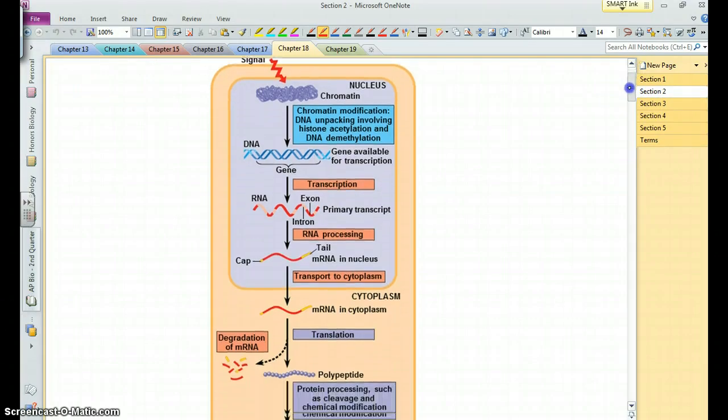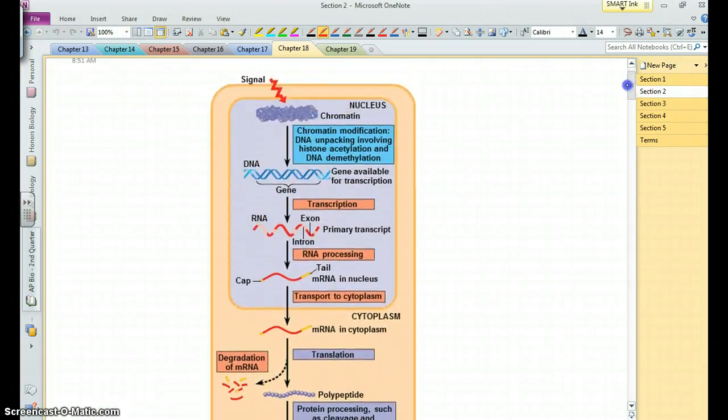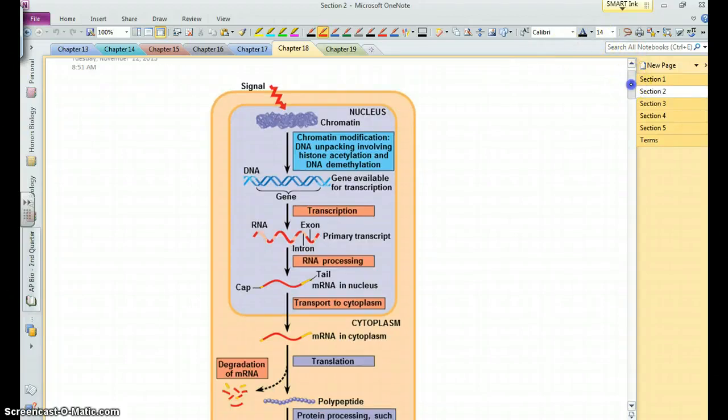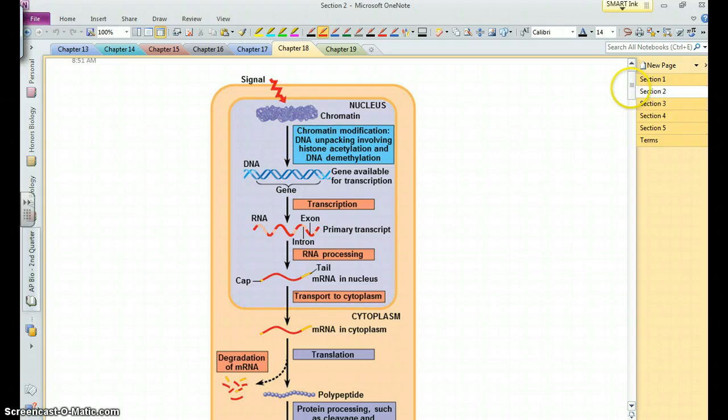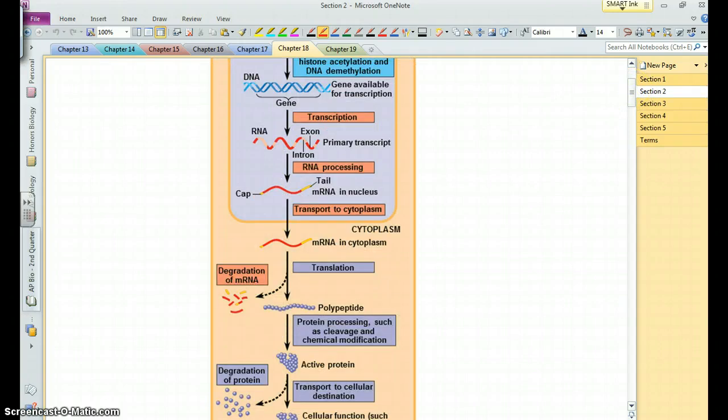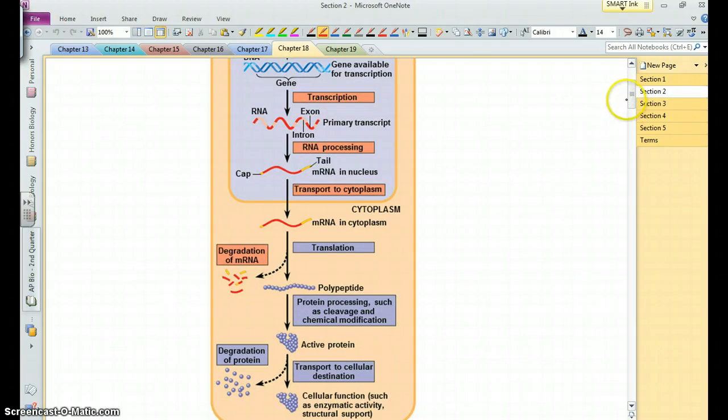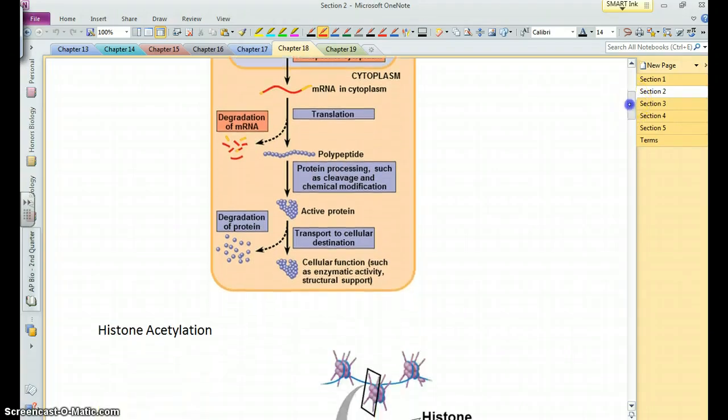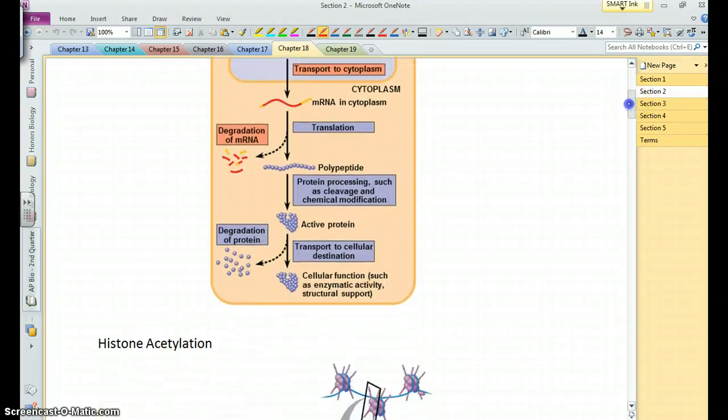So this image here shows us the different points at which you can control the expression of genes in the eukaryote, and we'll go through examples of these. You can do this at the DNA level, transcription, RNA processing, translation, and you can modify the proteins and mRNAs. All right, so let's move through here. DNA first.